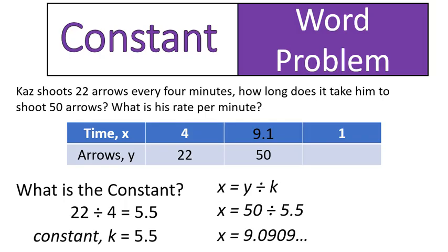The next part we have to solve is for our y value. Y is equal to our constant times our x value. So in this case, 5.5 times 1, which gives us 5.5. That tells us that Kaz is shooting 5.5 arrows per minute. That is the unit rate. And the unit rate is the same as the constant.